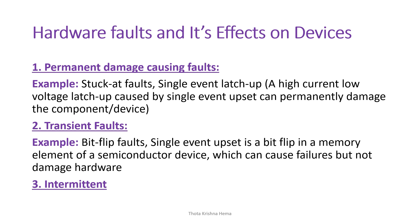What type of hardware faults do we get and what are their effects on devices? The first type is permanent faults — for example, stuck-at faults. Single event latch-up is an example: it is a high-current, low-voltage latch-up caused by a single event upset that can permanently damage the component or device. Transient faults are temporary faults — an example is bit-flip faults. A single event upset is a bit-flip in a memory element of a semiconductor device which can cause failures but not permanent damage to hardware.